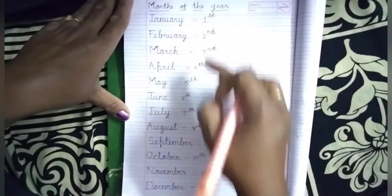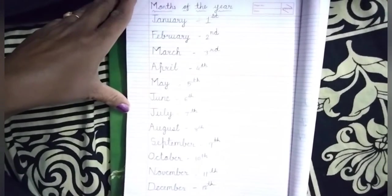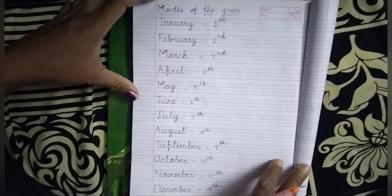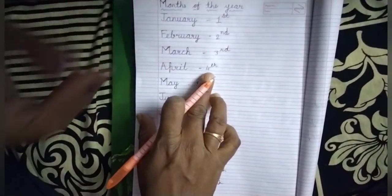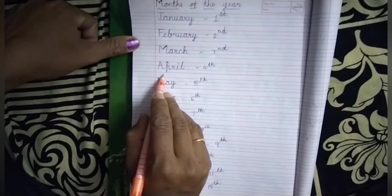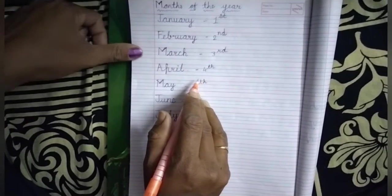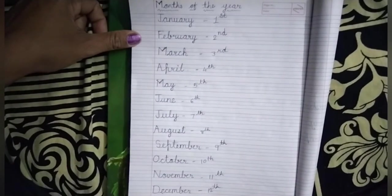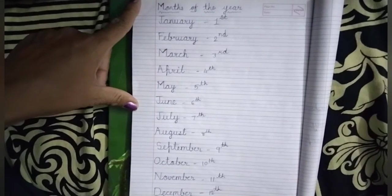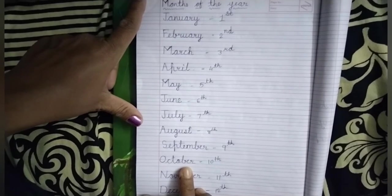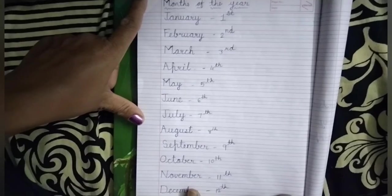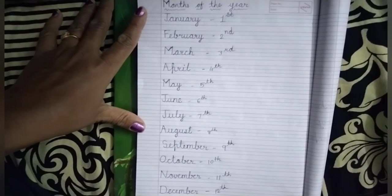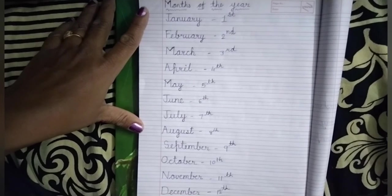Students, abhi aapko first to twelfth tak months of the year repeat karwaya hai. Agar aapko koi aise question kare, ki which is your fourth month of the year? To aap kya answer doge? Fourth matlab aapka fourth number ka month kaunsa hai? April month is our fourth month. So our fourth month of the year is April. Agar koi puchhe ki which is our tenth month of the year? Tenth month is October. So we can say October is our tenth month. Students, watch this video carefully and do your homework in your GK notebook. Thank you.